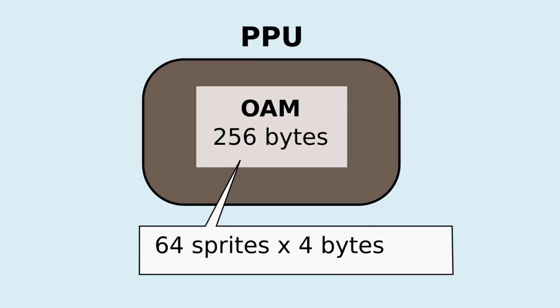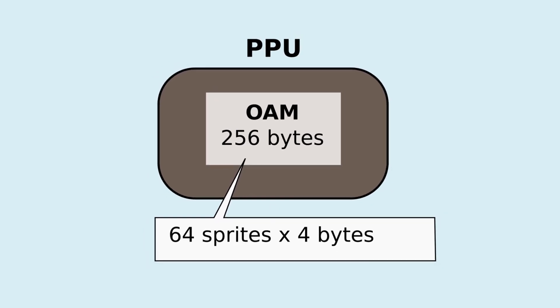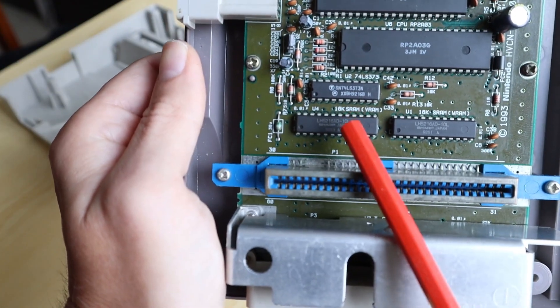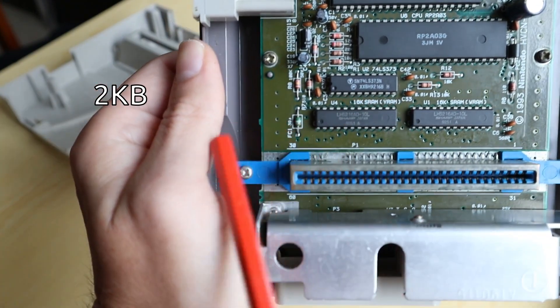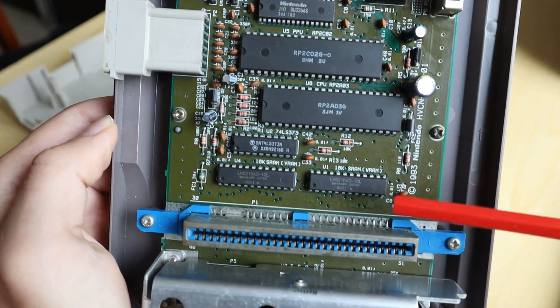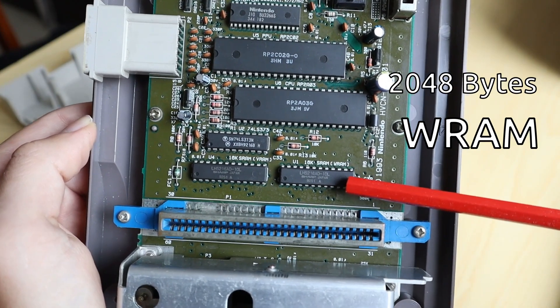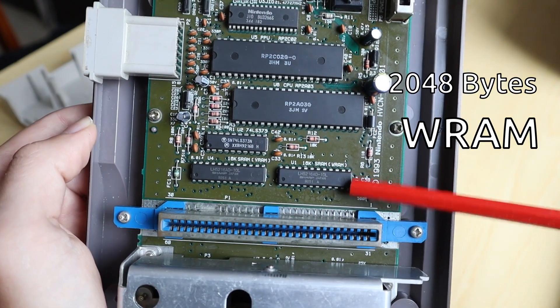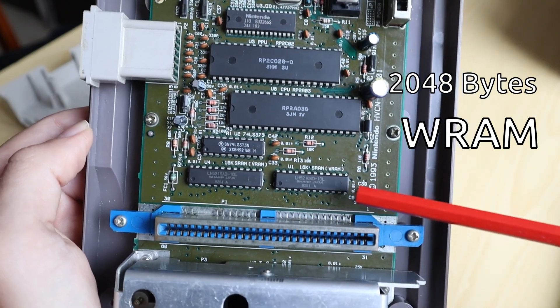Contrary to the 2600's TIA chip which had no video memory, the PPU actually has access to quite a large amount of it. For example, the PPU internally has 256 bytes of storage for the character sprites, also known as Object Attribute Memory. Plus the PPU can access a whopping two kilobytes of video RAM to draw backgrounds in your games. Finally we have another two kilobytes of RAM also known as the work RAM. By today's standards it doesn't seem like much, but compared to the 2600's 128 bytes, this is a lot.